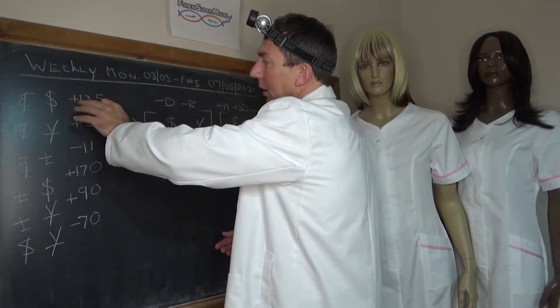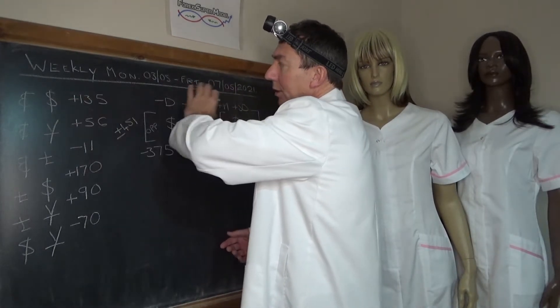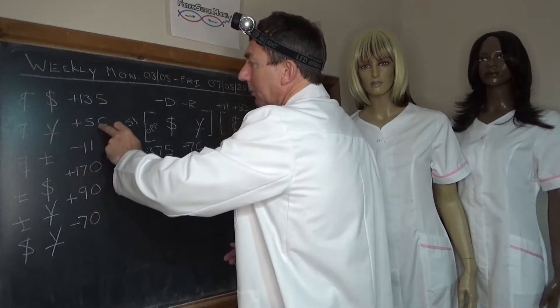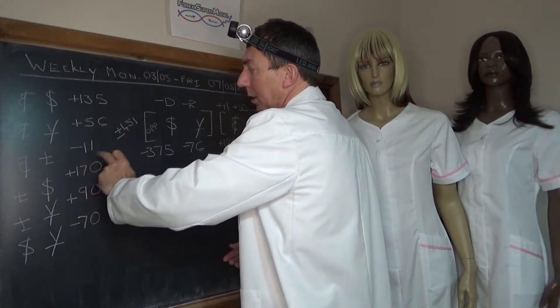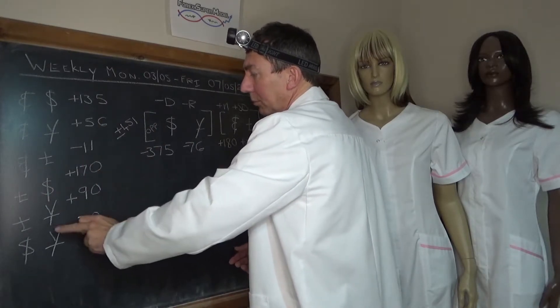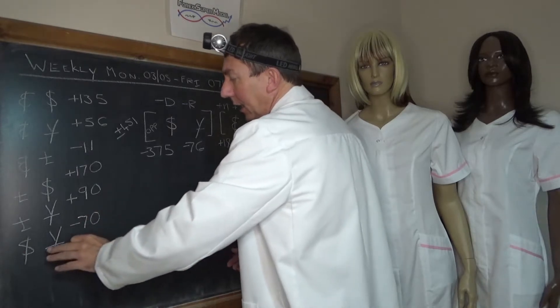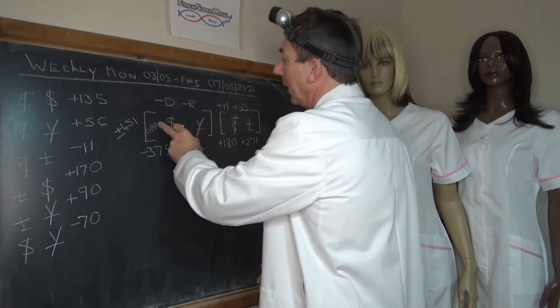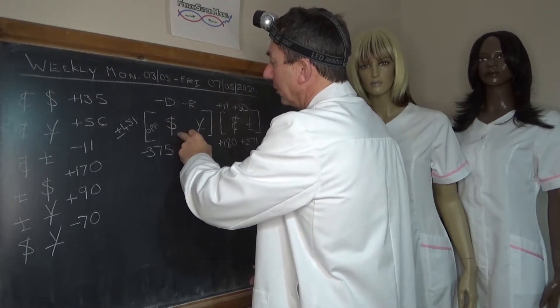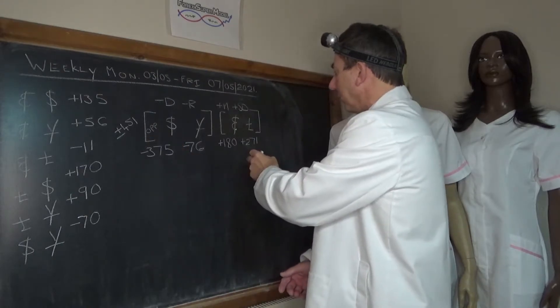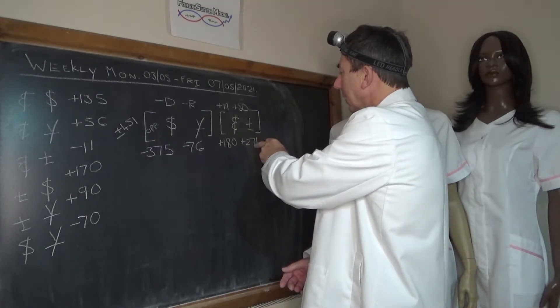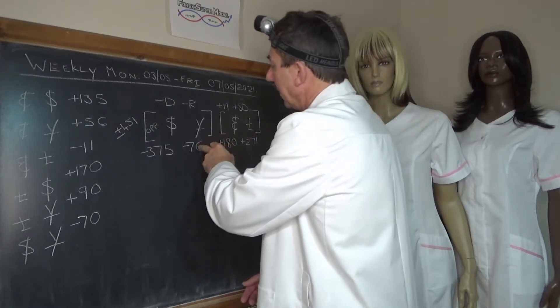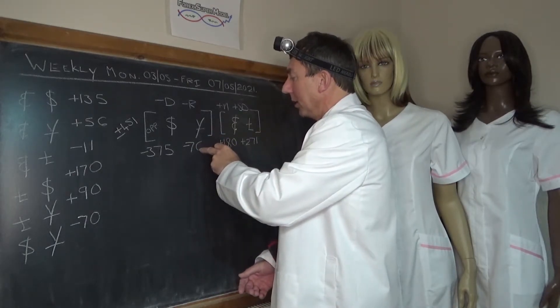EURUSD gained 135 pips over the period. EURUSD plus 56, EURUSD minus 11, GBPUSD plus 170, GBPUSD plus 90, and GBPUSD minus 70. If you plug that into the flows, you get a negative opposed driver in the dollar at minus 375. Front and back door flows mainly going into the pound at plus 271, into the Euro at plus 180, and the Yen was the negative rock at minus 76.